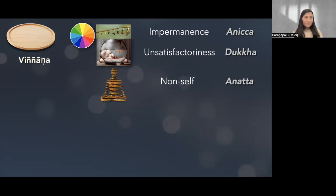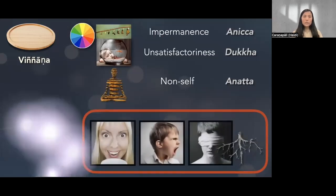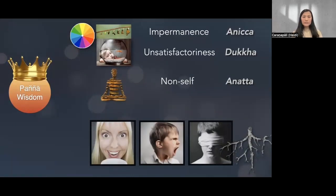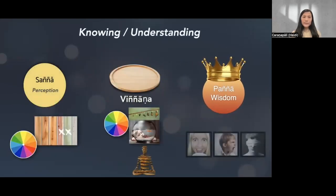Viññāṇa or citta consciousness is capable of understanding not only the shape and color but also the three characteristics. However, one thing it cannot do is eradicate defilements — that is the work of paññā. So viññāṇa, although it can know, cannot eradicate defilements. Only with wisdom can defilements be eradicated. Paññā, besides knowing shapes and colors and three characteristics, can penetrate to the true nature of things — understanding the Four Noble Truths — and with that cultivated wisdom it can eradicate defilements and bring us to the ultimate goal.